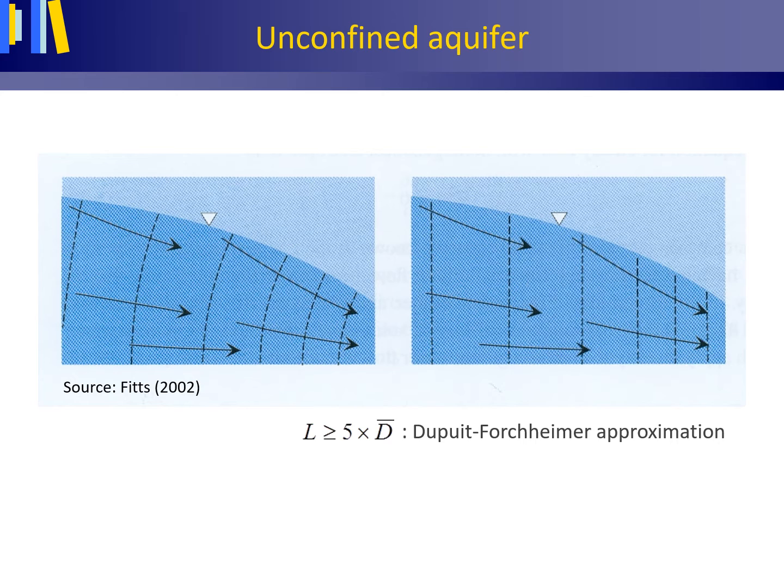we may assume that in a cross-section the hydraulic head H varies with the horizontal direction x and not with the vertical direction z. With the Dupuit-Forchheimer approximation, the resistance to vertical flow is neglected.